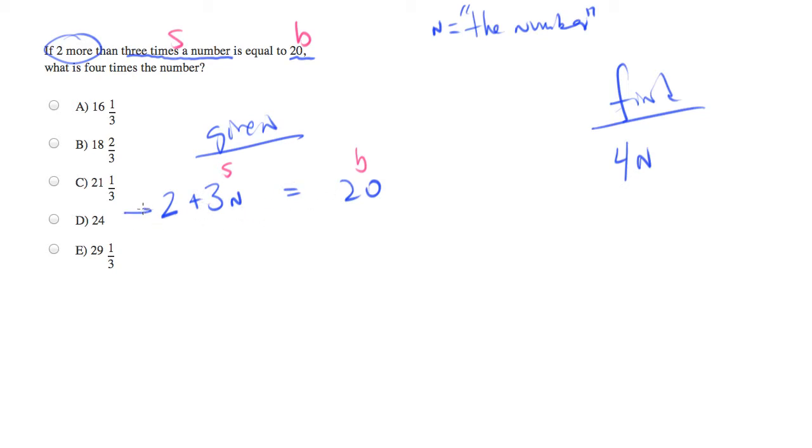Well, now we have one equation and one variable, so we can solve it for that variable. So let's subtract 2 from both sides. Divide both sides by 3, and we'll get n is equal to 6.